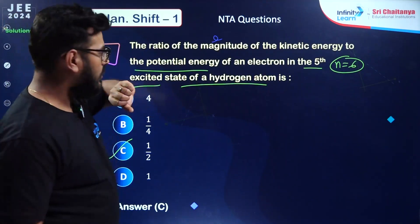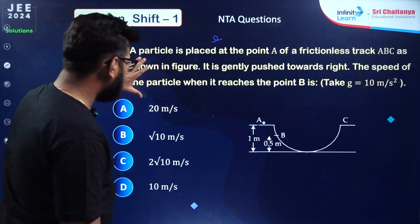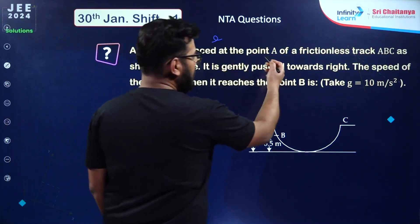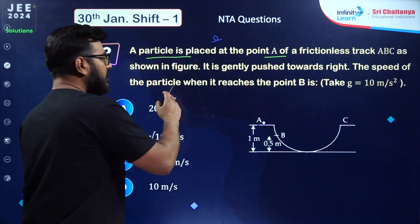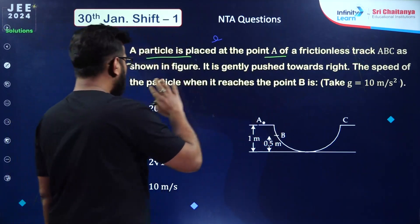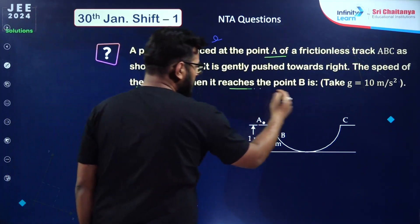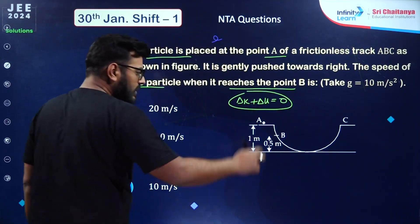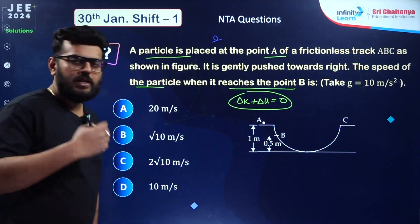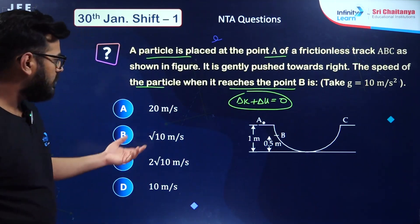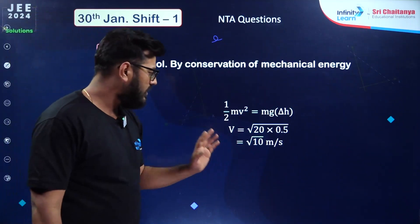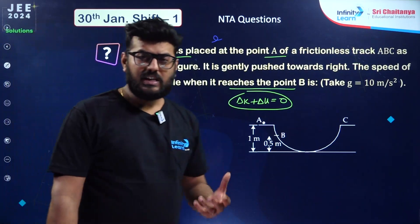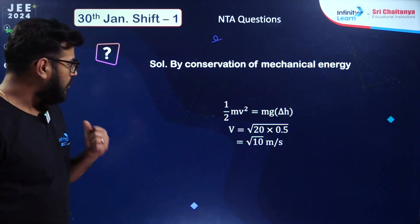This question is from work power energy. A particle is placed at point A of a frictionless track ABC and gently pushed towards right. The speed at point B is asked. You apply delta K plus delta U equals zero — conservation of mechanical energy. Whatever is the loss in potential energy, that becomes kinetic energy gained. Based on this formulation, the answer is under root of 10 meter per second, option number B.